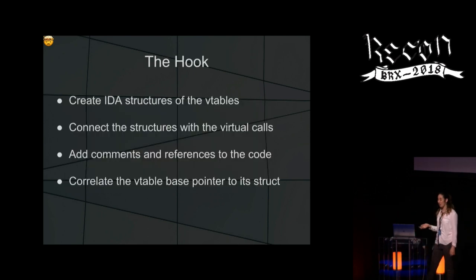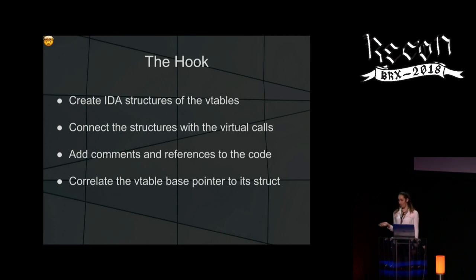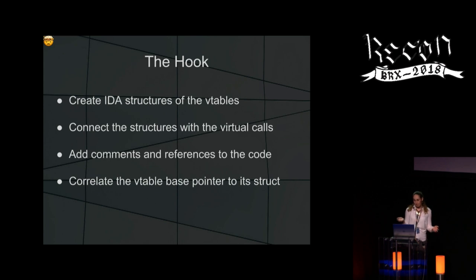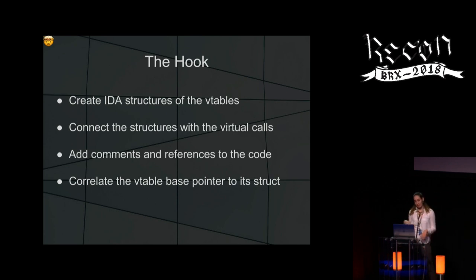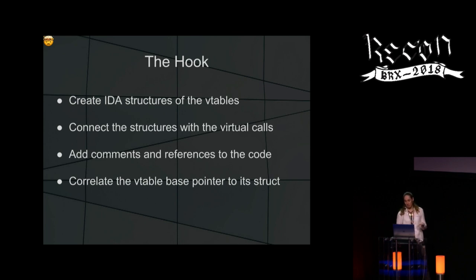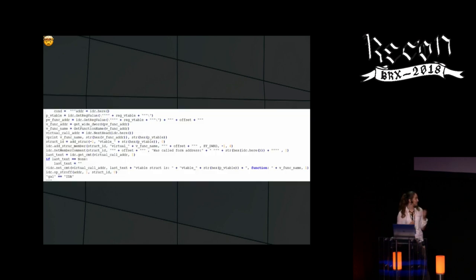The hook creates IDA structures of the Vtable, connects the structure to the virtual calls at the relevant register containing the pointer, adds references and comments, and correlates the Vtable base pointer to the structure. This is the hook — the condition inside the breakpoint that does everything I described.